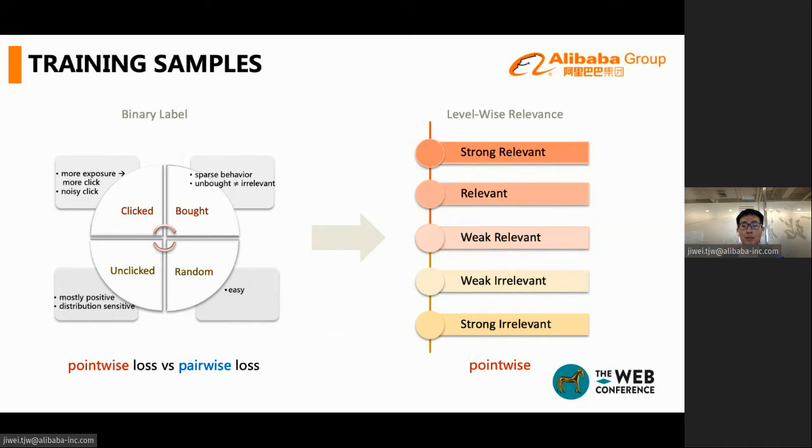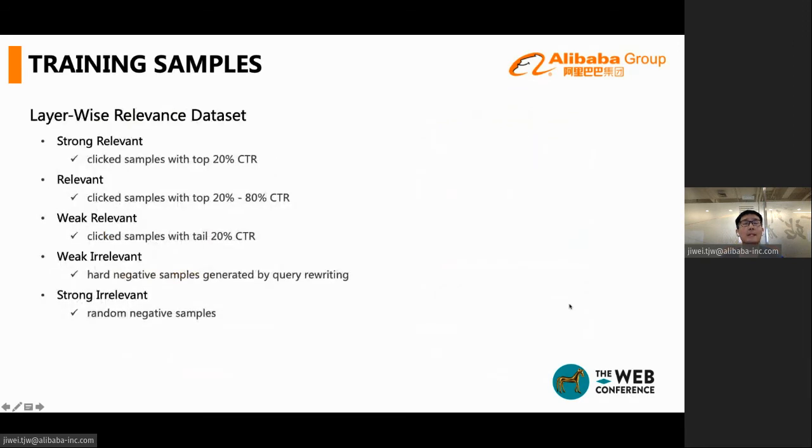To address these problems, we propose to consider the relevance of different samples in more fine granularity. We differentiate the training samples to five grids according to their confidence of relevance, and propose a level-wise relevance dataset. The idea of the fine-grained dataset is, although clicks do not reflect, do not represent relevance, the statistical CTR information can reflect the relevance. We believe samples with higher CTR are more relevant, while samples with lower CTR may have problem in relevance.